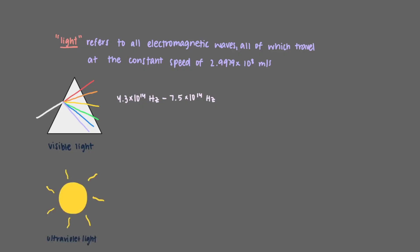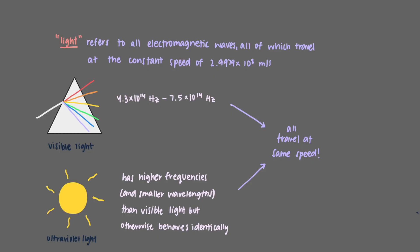Ultraviolet light, which humans cannot see with their eyes, has higher frequencies than visible light and smaller wavelengths, but otherwise behave identically. All of these waves travel at the same exact speed. The only special thing about visible light is that human eyes can perceive it.